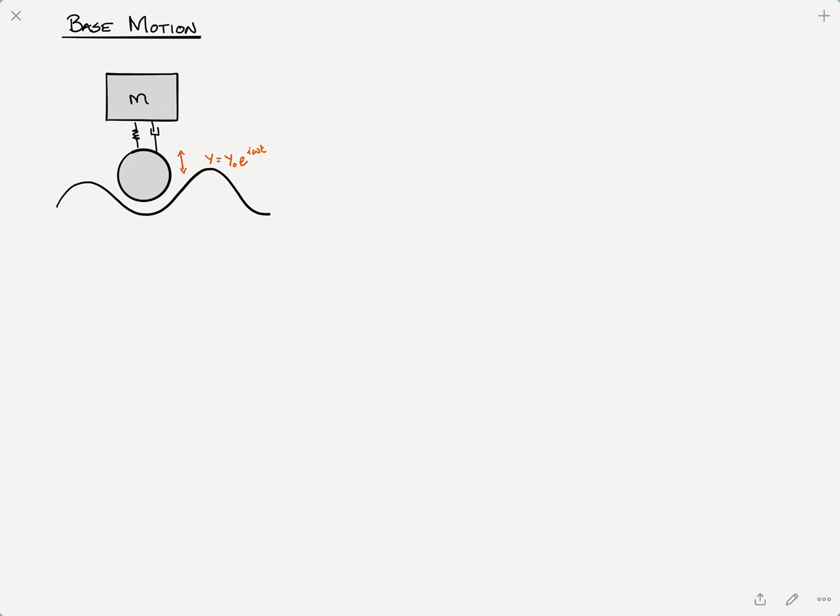In this example, we see a vehicle traveling down a bumpy road. The displacement of the wheel due to the road could be imagined as some sort of harmonic motion, where we could describe it as y equals y0 e to the i omega t, where y0 is the amplitude of the wave.